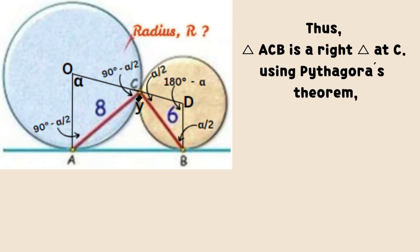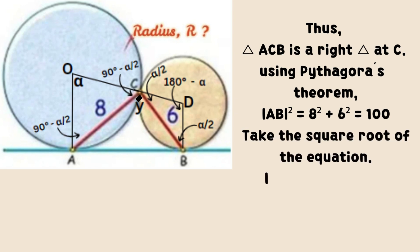Hence, triangle ACB is a right triangle at C. Using Pythagoras theorem and substituting values, we have that the square of AB equals the sum of the square of 8 and the square of 6 which is equal to 100. Take the square root of the equation and we have that line AB equals to 10.